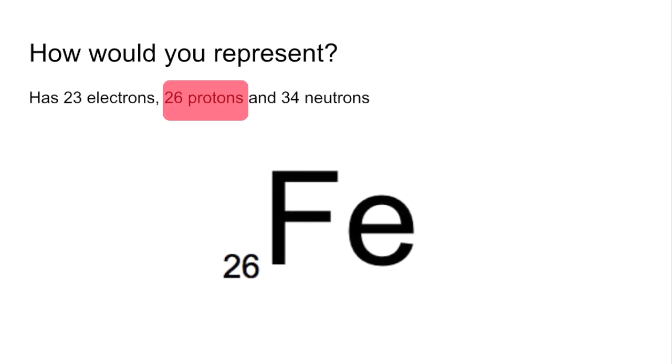And the next thing I'm going to look at is the electrons. Are they the same? No, there are 3 fewer electrons than protons, so it's got a 3+ charge. And now for the mass number, it's the protons and neutrons that make up the mass, so we're adding 26 to 34 and we get 60. So that's how you would represent that.